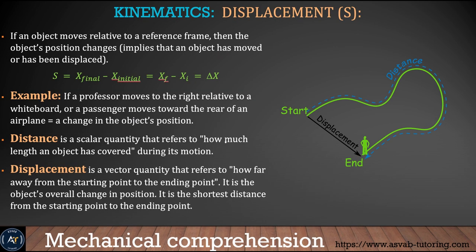The first thing we'll learn is distance and displacement. Distance is the scalar quantity that refers to how much length an object has covered during its motion. Displacement is a vector quantity that refers to how far away from the starting point to the end point. Say like you're walking around your swimming pool with a zigzag path — you started here, go all the way and stopped here. All the distance you cover is called distance, and the length from your starting point to the end point is called displacement. Displacement tells not only the length but also the exact direction — that is the main difference.